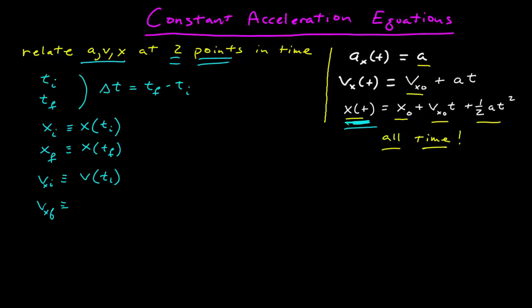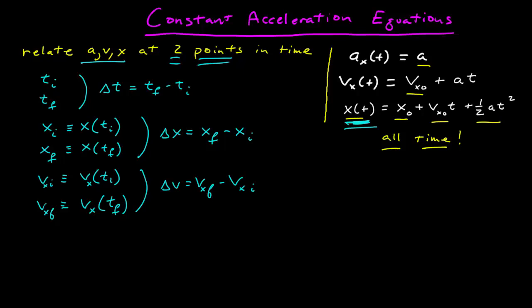The final velocity is the velocity function evaluated at the final time. We can also calculate the position difference, which is the final position minus the initial position, and the velocity difference is the final velocity minus the initial velocity. The initial acceleration is just a, and the final acceleration is just a, because that's the one assumption we're using through all of this — that the acceleration is constant. So these are how I define my terms at these two points in time, and now I want to create relationships between them that I can use to solve problems.